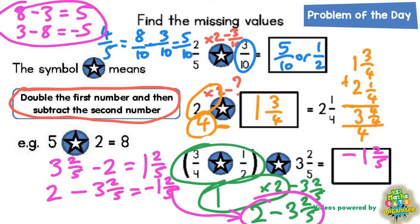Of course the other thing you could do is turn the 2 fifths into a decimal which would be 0.4. So it could be negative 1.4.